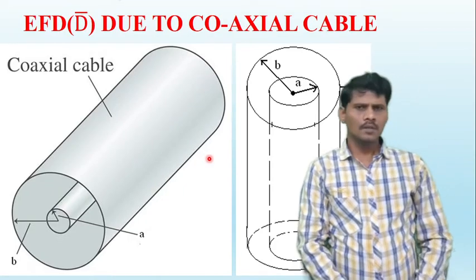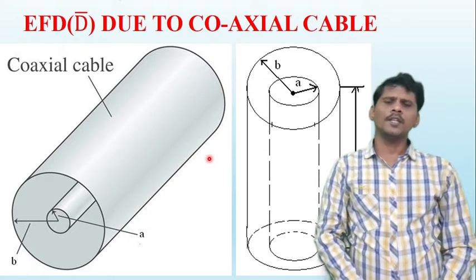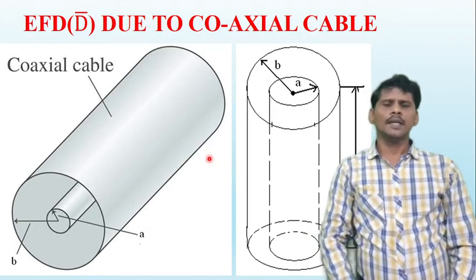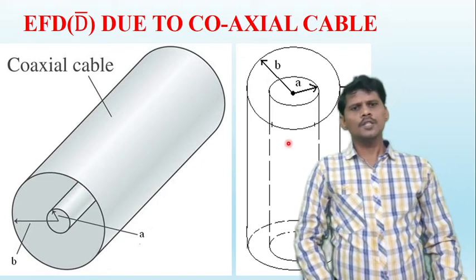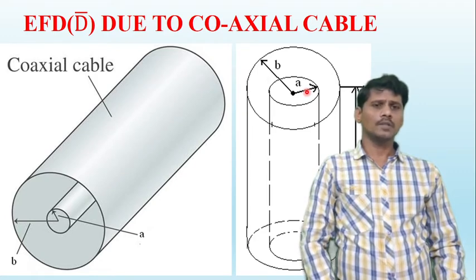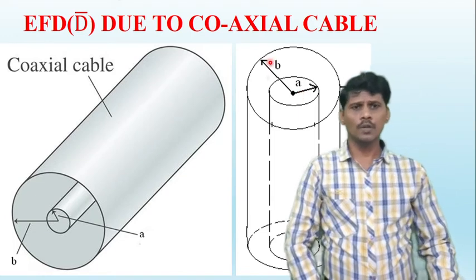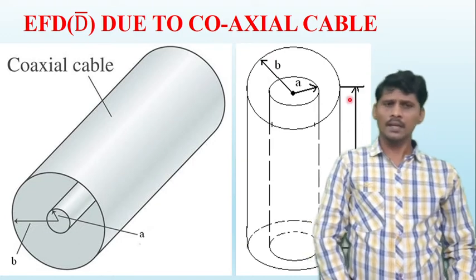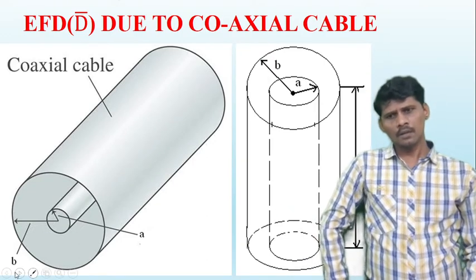In this video we are going to discuss another application of Gauss's Law — that is electric flux density due to a coaxial cable. This is a figure of the coaxial cable. The inner coaxial cable cylinder has radius small 'a' meters, the outer conductor radius is 'b' meters, and the length of the coaxial cable is capital L meters.